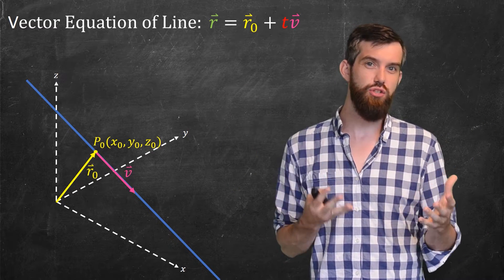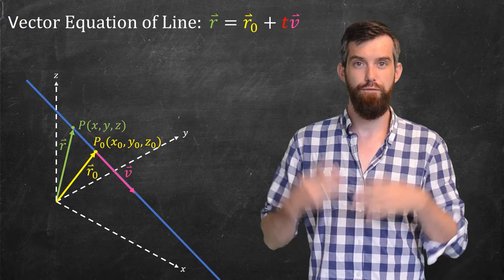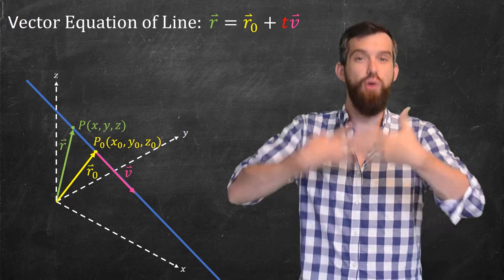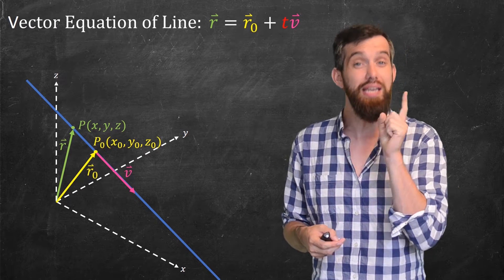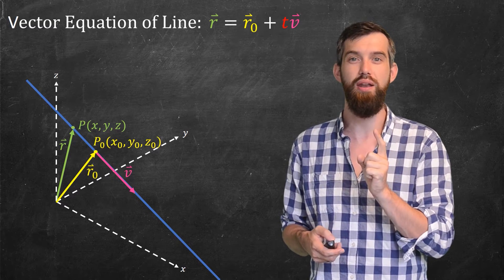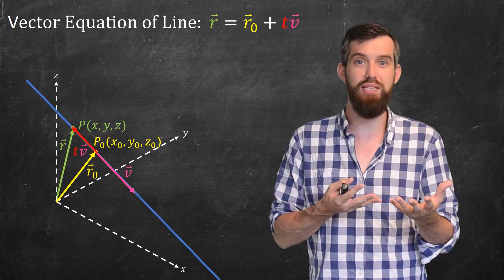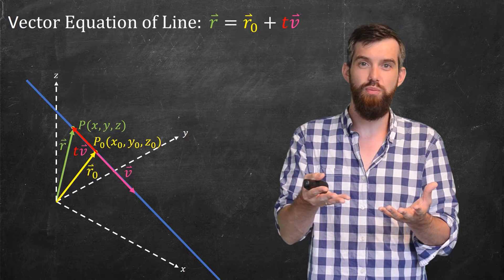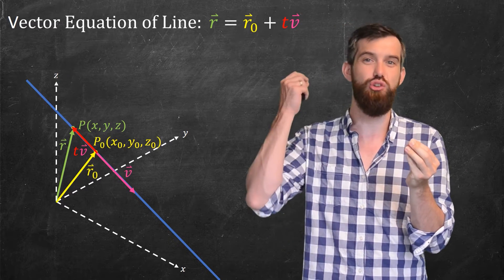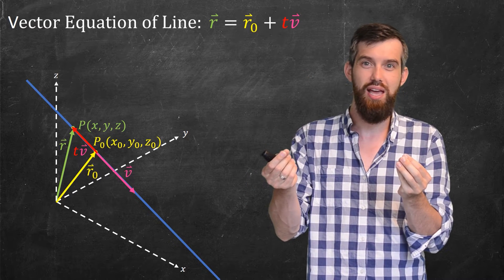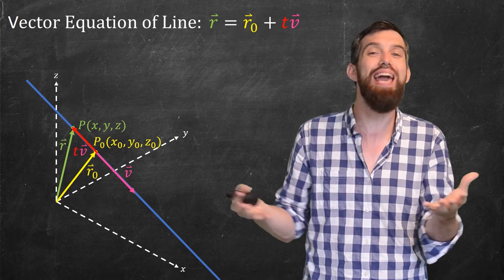This construction works no matter where the point p with coordinates x, y, z is. For instance, if I take another point p on the other side, I can still form a triangle, but now t has to be a negative value. I can still write that r equals r0 plus t times v. So starting at the fixed point x0, y0, z0 and traveling some multiple of the direction vector v, I can reach anywhere else on the line.